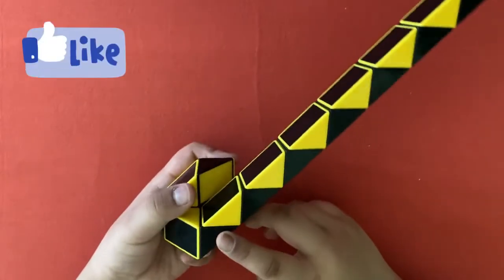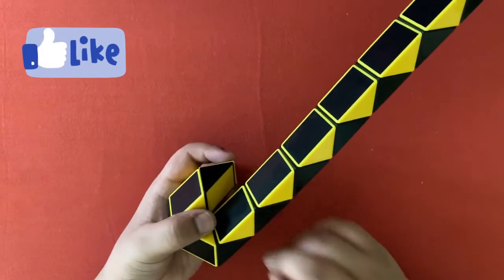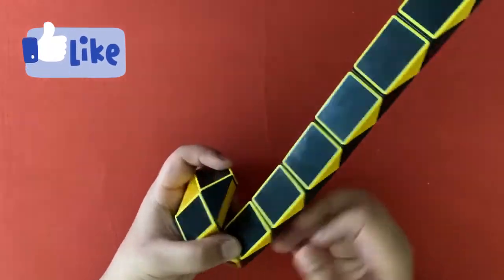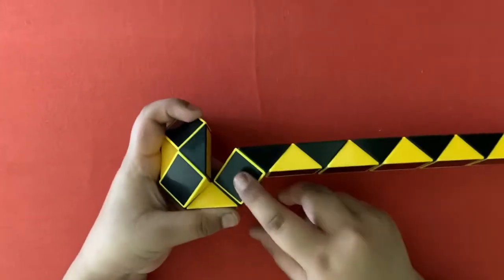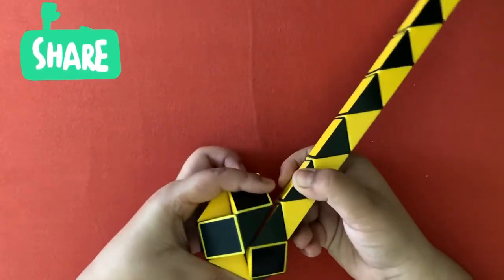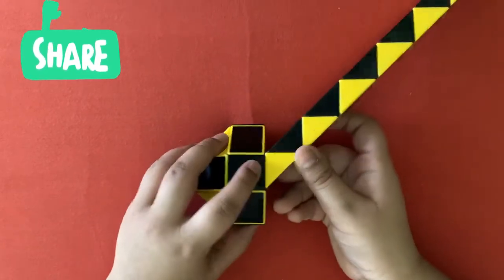Now rotate it like this and count three pieces: one, two, three. Rotate the third piece towards you. And then take this rectangle and rotate it in the counterclockwise direction.